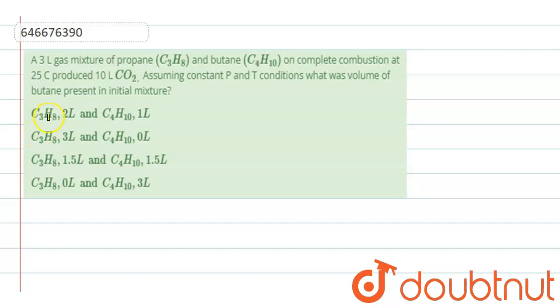The given question is: a 3 liter gas mixture of propane and butane on complete combustion at 25 degree Celsius produced 10 liter of carbon dioxide. Assuming constant pressure and temperature conditions, what was volume of butane present in the initial mixture?